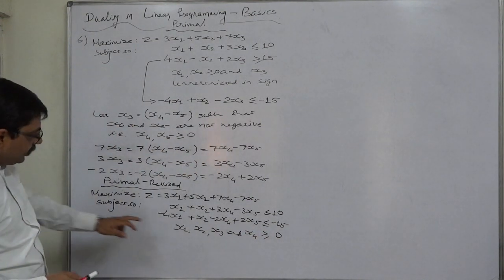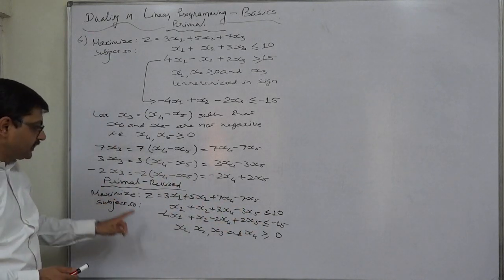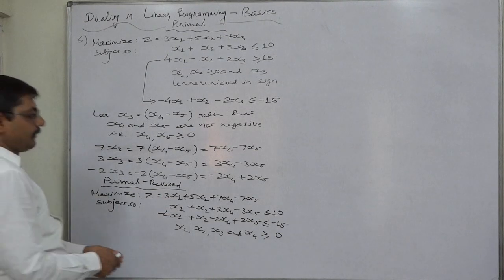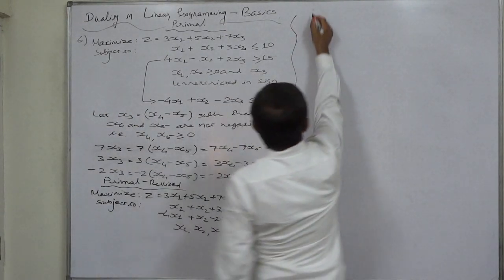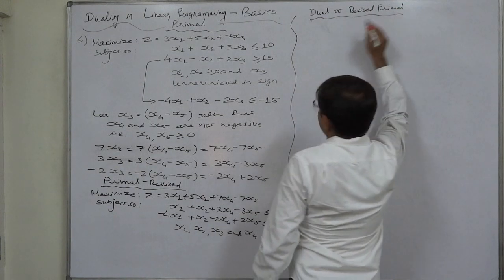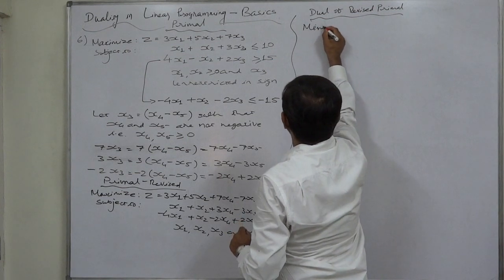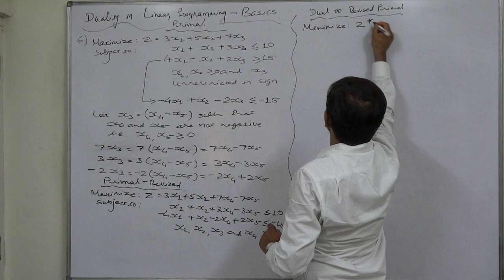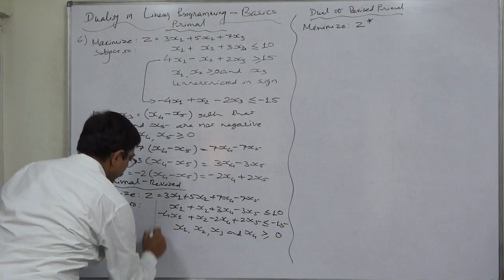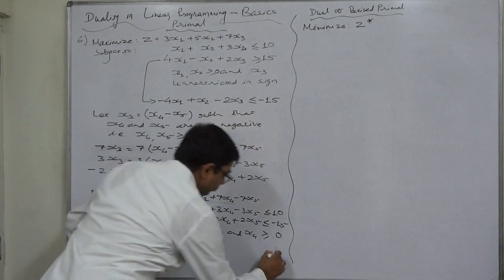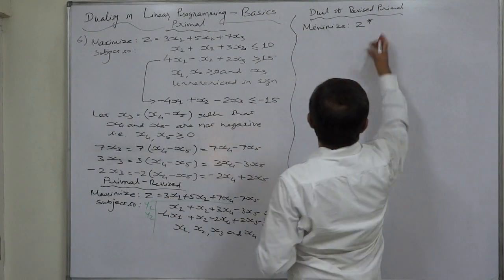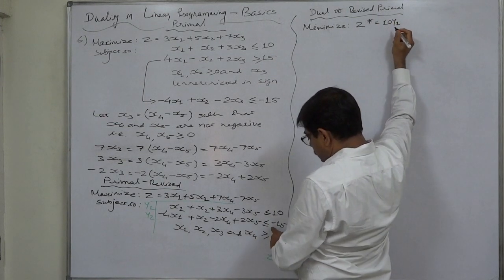Now we have four variables x1, x2, x4, and x5 — all non-negative. Both constraints have the less than or equal to sign matching the maximization objective, so we can write the dual of this revised primal. Against a maximized objective the dual must be minimized. Introducing dual variables y1 and y2, the dual objective is: minimize z* equals 10y1 minus 15y2.